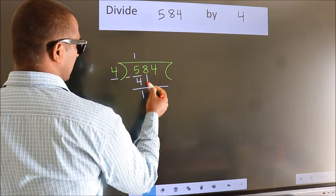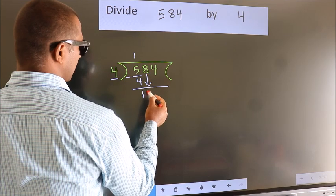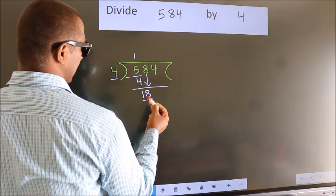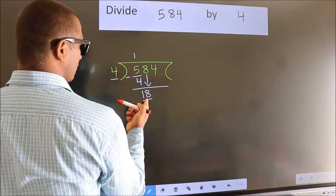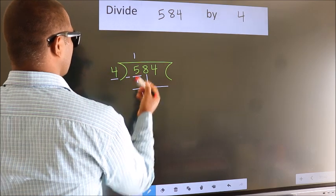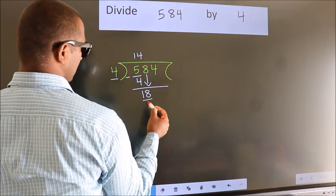After this, bring down the beside number. So, 8 down. So, 18. A number close to 18 in 4 table is 4 fours, 16.